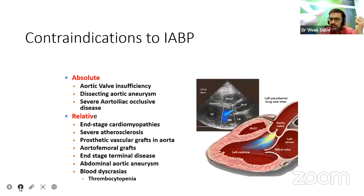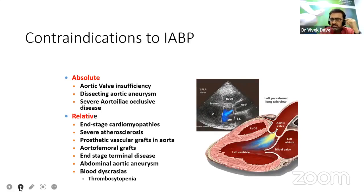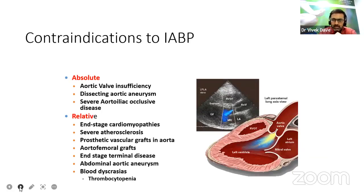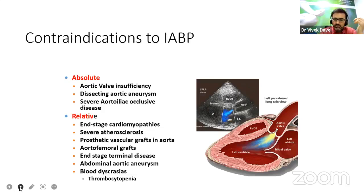Contraindications of IABP: absolute contraindications include aortic valve insufficiency, dissecting aortic aneurysm, and severe aortoiliac occlusive disease — in these you should not attempt to put an IABP. Relative contraindications include end-stage cardiomyopathy, severe atherosclerosis, prosthetic vascular grafts in aorta, aortofemoral grafts, end-stage terminal disease, abdominal aortic aneurysm, and various blood dyscrasia, coagulopathy, and severe thrombocytopenia.